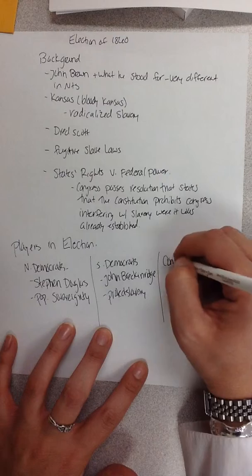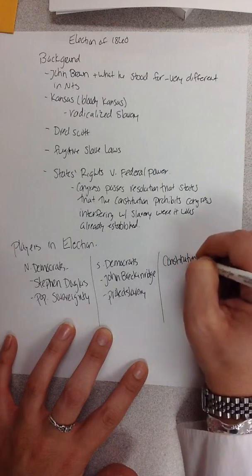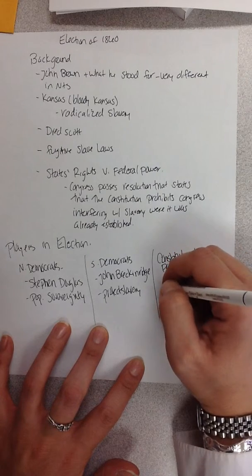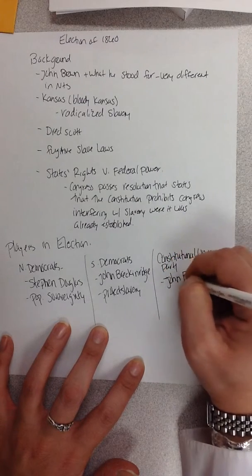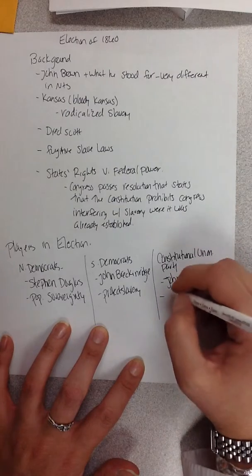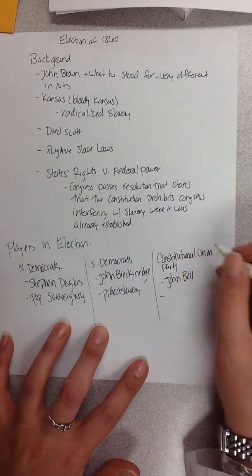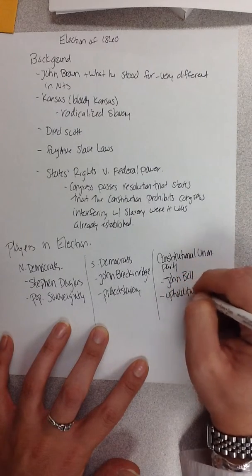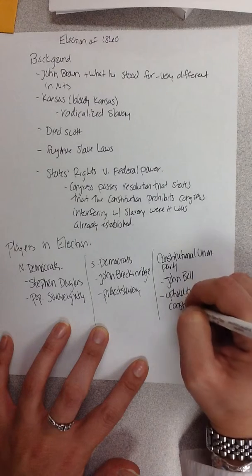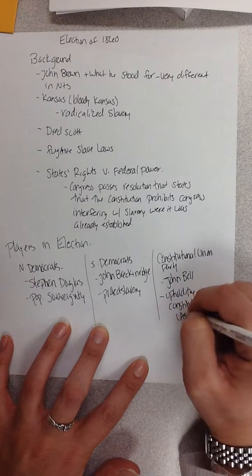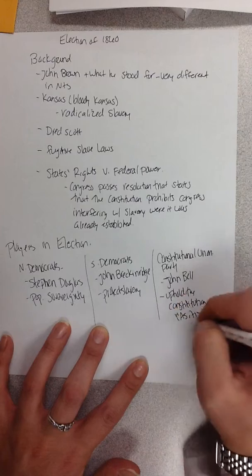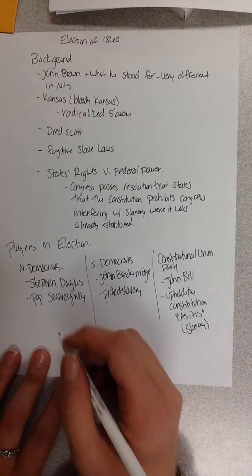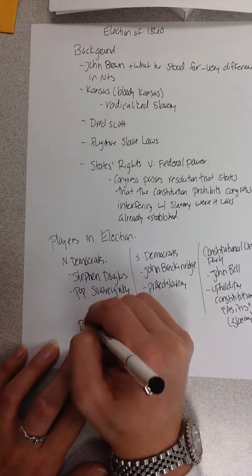A new party — the Constitutional Union Party — came out with a candidate named John Bell. No relation to Taco Bell. The Constitutional Union Party's stance was to uphold the Constitution as it is, which includes slavery — they wanted to maintain it.